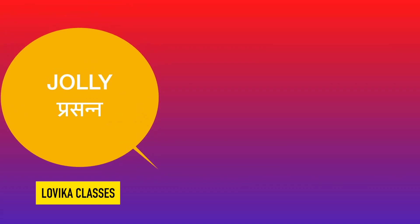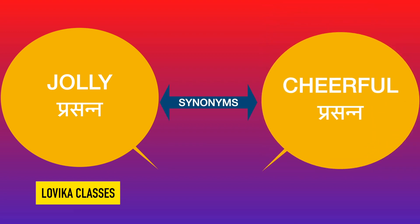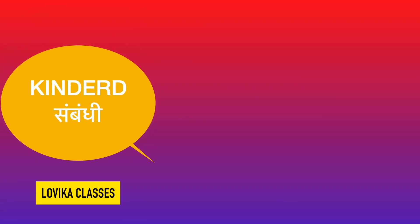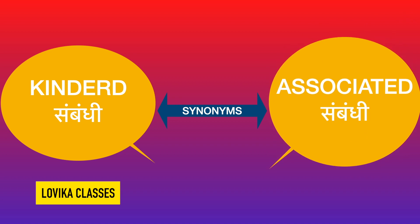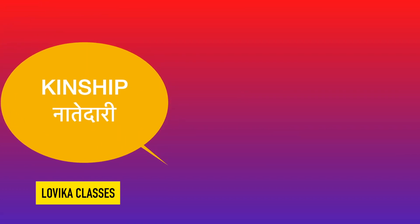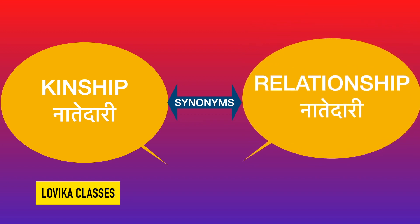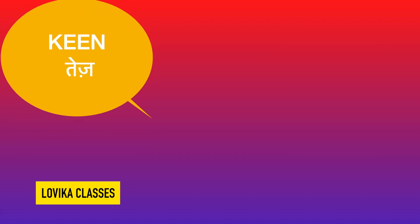Jolly means chava ta — khush khush rehne wala, prasan. Its synonym is cheerful, meaning always happy. Kindred means sambandhi — means associated. Usse related matlab yahan pe hai, sambandhi means related. Kinship means naatedaari — its synonym is relationship, meaning rishte naate.